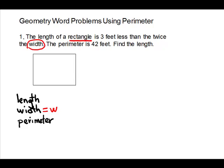We'll translate the length from the sentence: the length of the rectangle is 3 feet less than twice the width. Less than means subtract, and it translates backwards. The 3 is what we take away, so it goes after the minus sign. Twice the width is 2w, so the length is 2w minus 3. The perimeter is given as 42 feet.